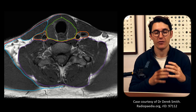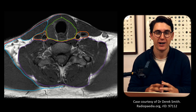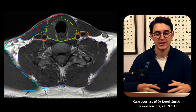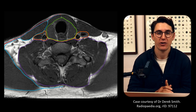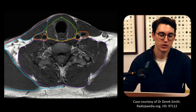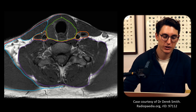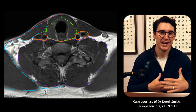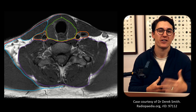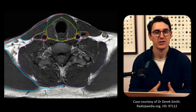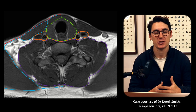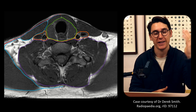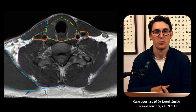To recap: we have our visceral space surrounded by our middle layer of the deep cervical fascia; our perivertebral space surrounded by our deep layer of the deep cervical fascia; our carotid space with fascia from the superficial, middle, and deep layers; and two potential spaces — our retropharyngeal space heading down to about T1, and our danger space between the alar fascia and the deep layer, heading all the way down to the level of the posterior diaphragm.